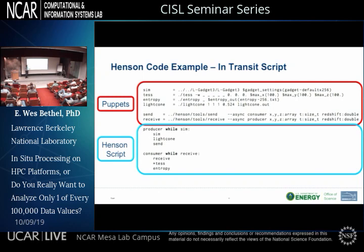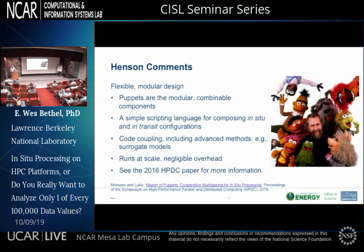Here's the Henson script. On the producer side: while simulation is still running, execute the simulation, execute the light cone to extract stuff, then send the stuff somewhere. On the receiver side: while receiving, you receive the data, run the tessellation code for the Voronoi tessellation, then compute entropy on this 3D field. The yields you saw in the code — when you get down to the bottom, that's the yield; it blocks. The scripting mechanism then goes to the other loop and executes it. You can insert conditionals as well and do more advanced stuff. Henson has flexible module design, a powerful scripting language, and is being used for code coupling operations at scale — tens of thousands of cores at NERSC.